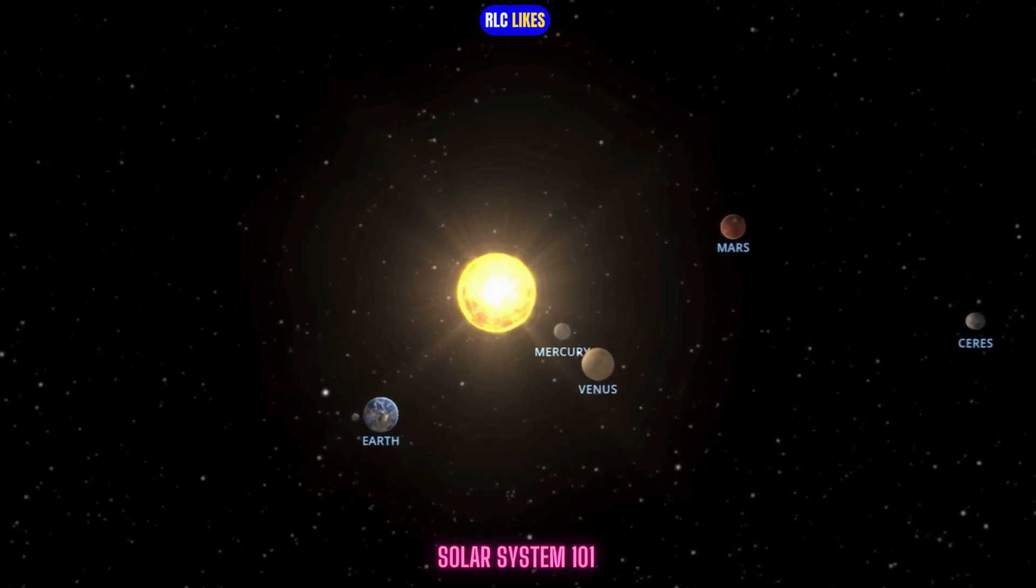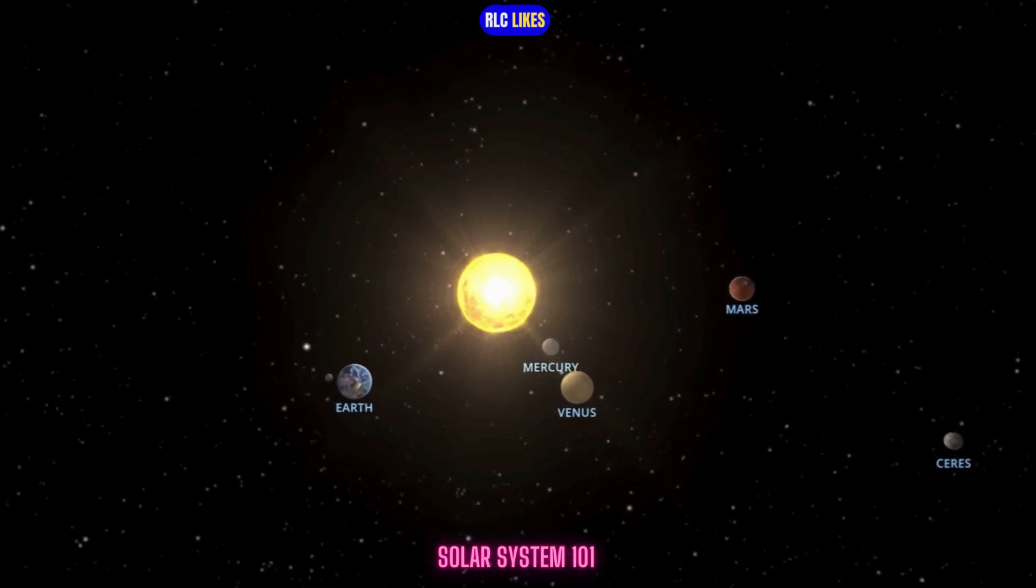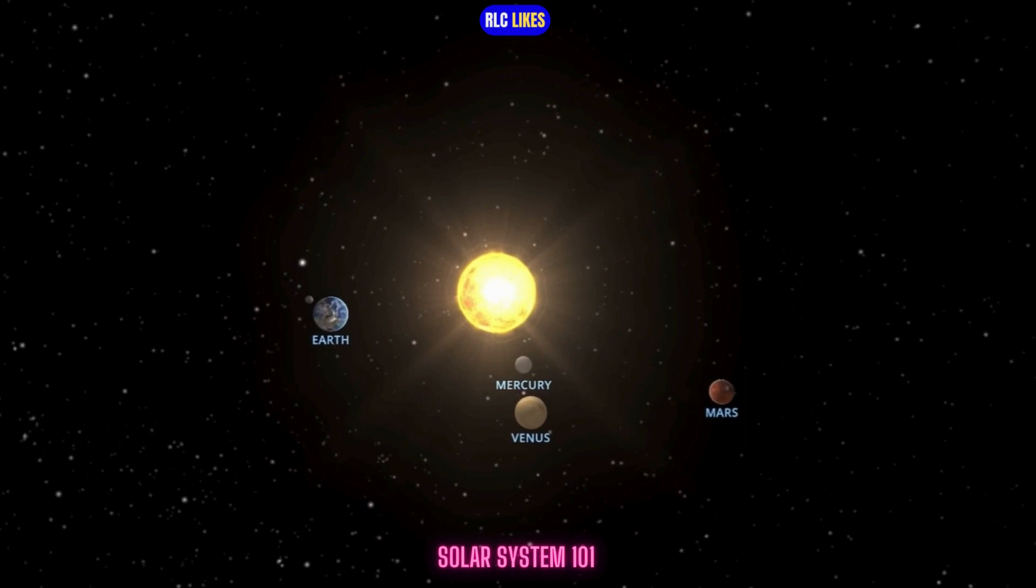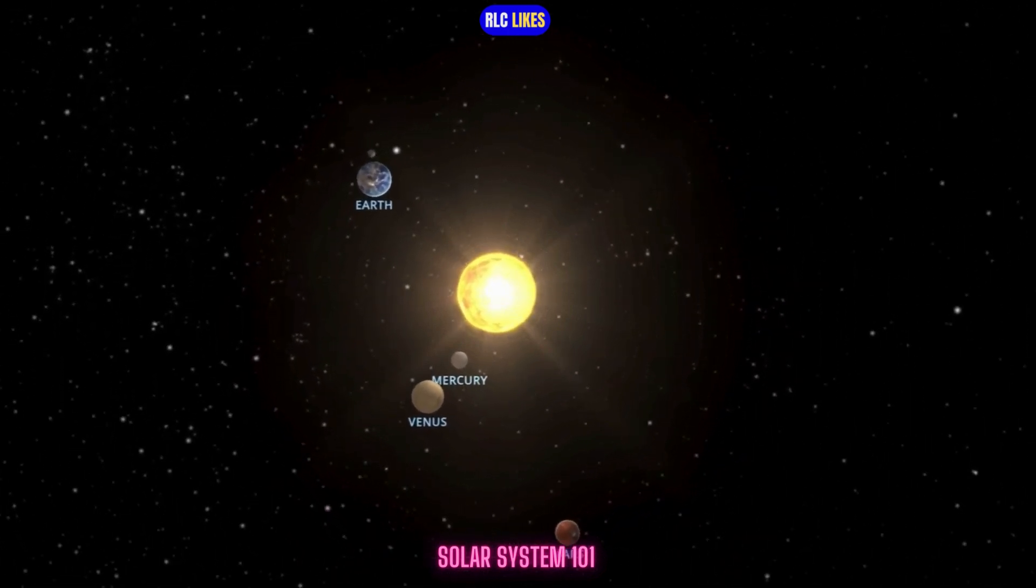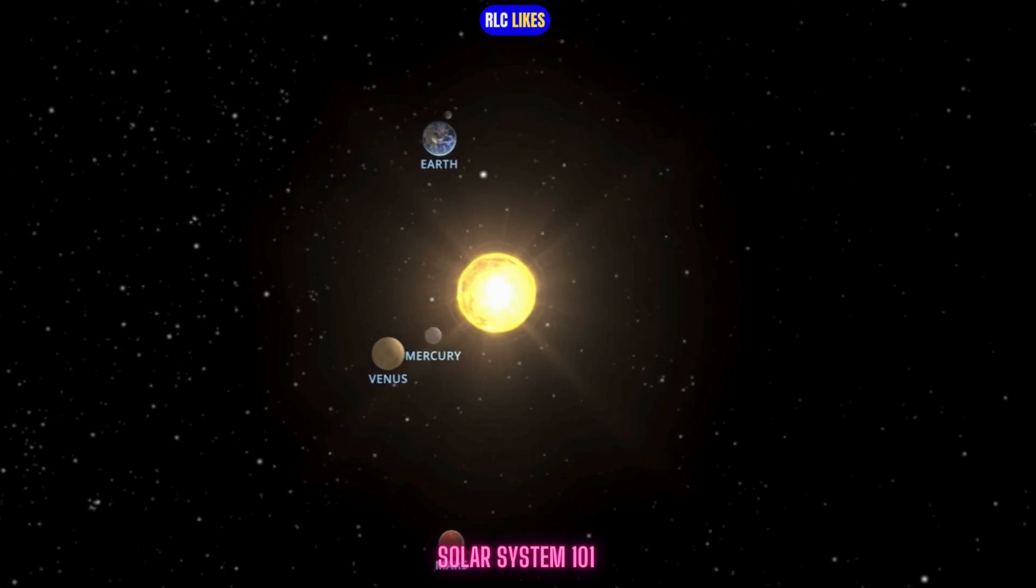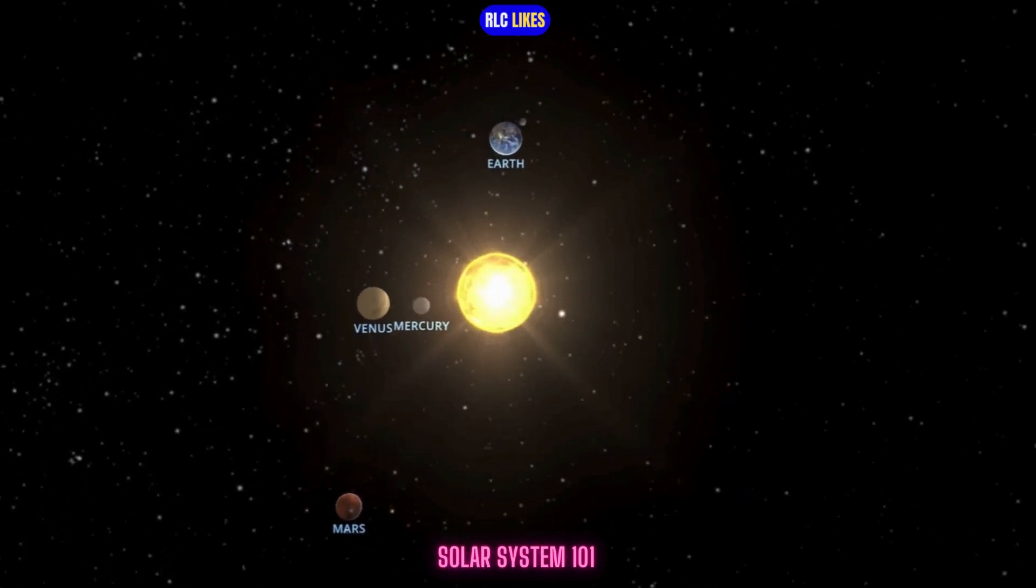Our solar system orbits the center of the galaxy at about 515,000 miles per hour. It takes about 230 million years to complete one orbit around the galactic center.